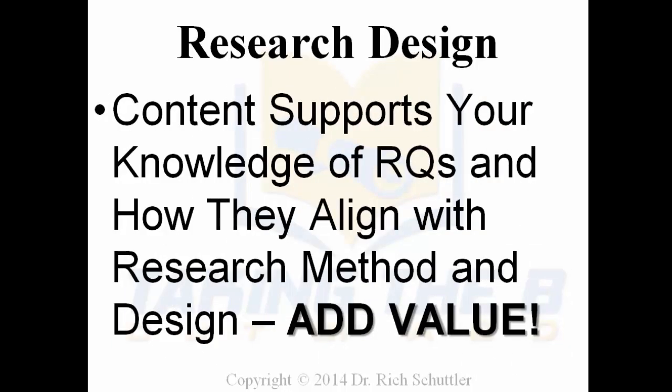In the research design, make sure your content supports your knowledge of the research questions and how they align with your research method and design – this adds value. As you write your research design and justify the rationale for it, relate it back to the research questions. This is what I call closing the loop. When you close the loop and show how your research method and design is appropriate to produce the information needed to answer the research questions, that helps lessen the specific problem for the stakeholders. You're showing great alignment of the research method and design throughout your work.